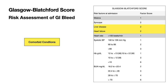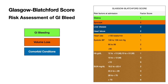Let us look at it together. The scoring parameters indicate whether the patient had GI bleeding, whether the bleeding involved significant volume loss, and whether there are any comorbid conditions that could interfere with management — especially if you plan to discharge the patient.